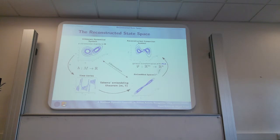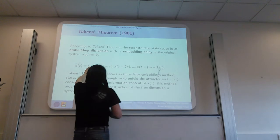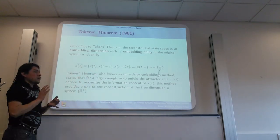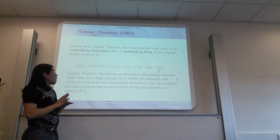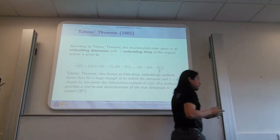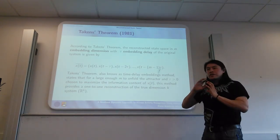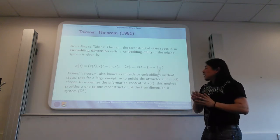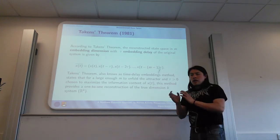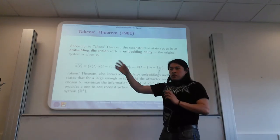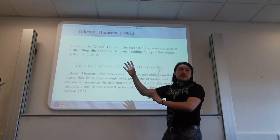The Takens theorem is basically a time delay vector which has two parameters: m, which is the embedding dimension, and tau, the embedding delay. Those two parameters are quite important to reconstruct the state space. The idea of choosing proper values for m and tau gives us the unfolded manifold and we can see different formations.